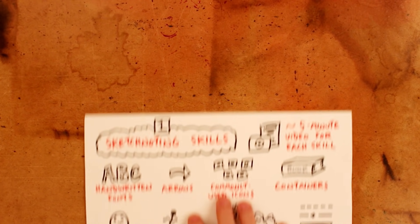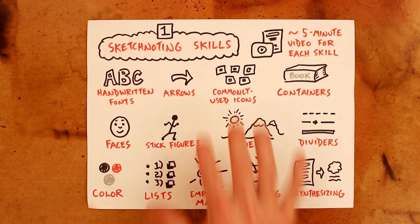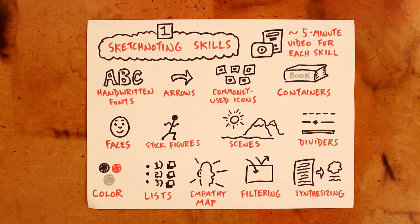Let's now get a quick overview of what sorts of things we'll be exploring in those video lessons. I've broken things down into three parts. Part one will focus on individual sketchnoting skills — these will be the tools that make up your note-taking toolkit. You'll learn how to use handwritten fonts, arrows, stick figures, icons, colors, and many other things that will make your notes more dynamic and more useful.